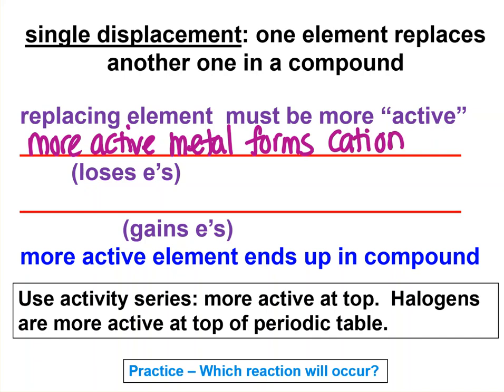Remember, cation is the word for a positive ion. So it becomes more active if it's losing electrons. For a nonmetal, nonmetals tend to attract electrons. So for a more active nonmetal, it's going to form an anion.